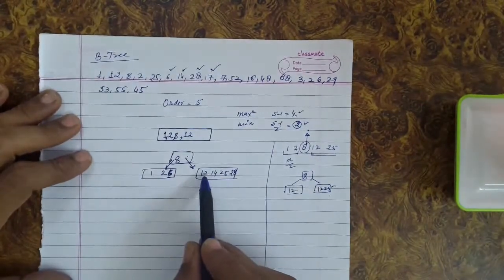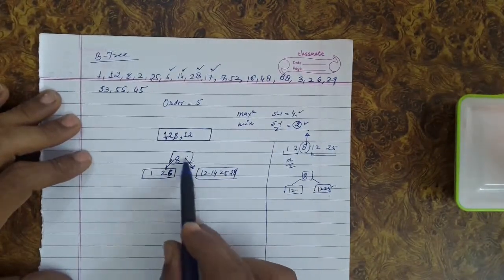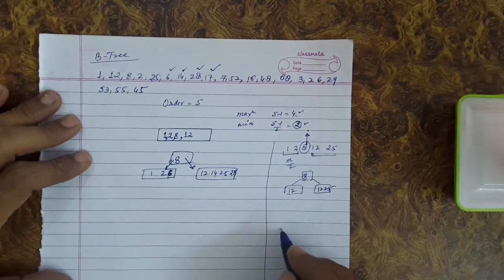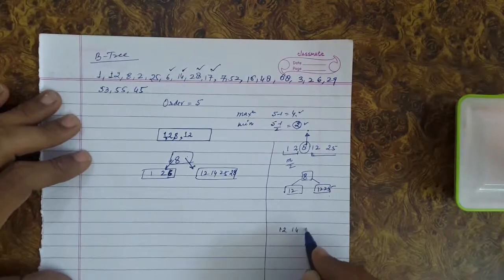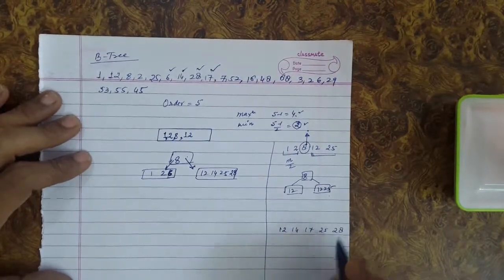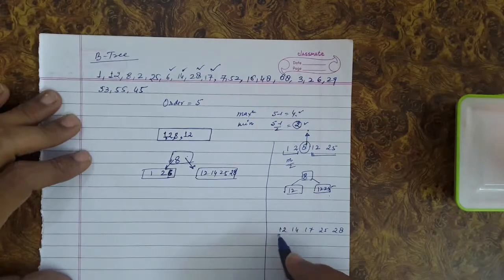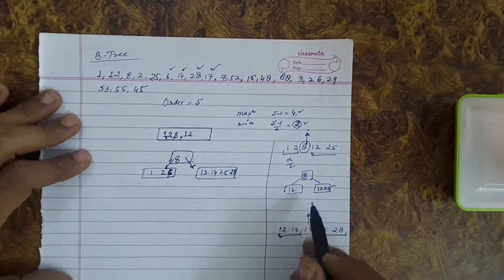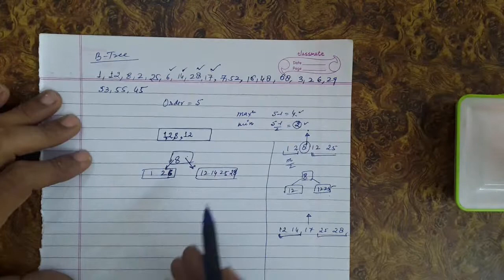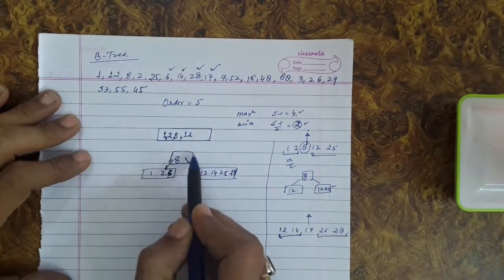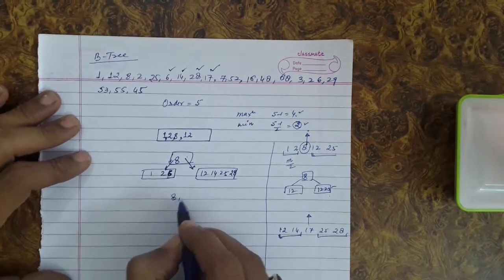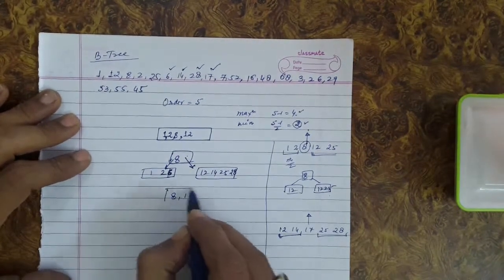Next is 17. Since 17 should be inserted in the right node, but this would violate the maximum condition. We virtually insert it, giving 12, 17, 25, 28. We retain m/2 keys on the left, send the median key 17 upwards, and keep the rest on the right. Since there is already a node with key 8 above, 17 gets accommodated there, giving us 8 and 17 in the root.